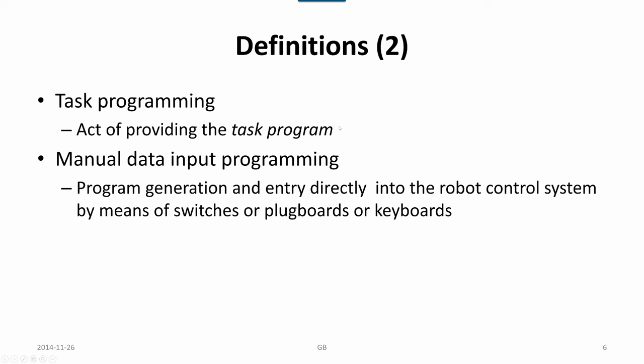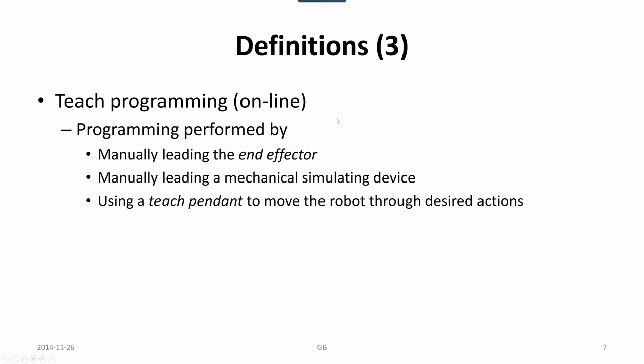Definitions two: the task program is the act of providing the task program. Manual data input programming is the program generation and entry directly into the robot control system by means of switches, plug boards, or keyboards. Teach programming online is programming performed by manually leading the end effector, manually leading a mechanical simulation device, or using a teach pendant to move the robot through the desired actions.